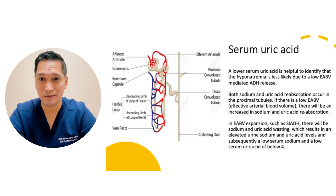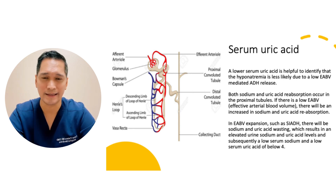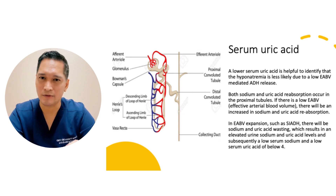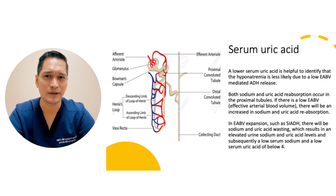Checking a serum uric acid level is helpful in determining if the cause is related to SIADH or another cause. A lower serum uric acid helps identify that the hyponatremia is less likely due to a low effective arterial blood volume-mediated ADH release. Both sodium and uric acid reabsorption occur in the proximal tubules. If there is a low effective arterial blood volume, there will be increased sodium and uric acid reabsorption. In EABV expansion such as SIADH, there will be sodium and uric acid wasting, resulting in elevated urine sodium and uric acid levels, and subsequently a low serum sodium and a low serum uric acid of less than 4.